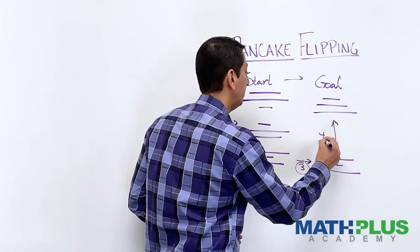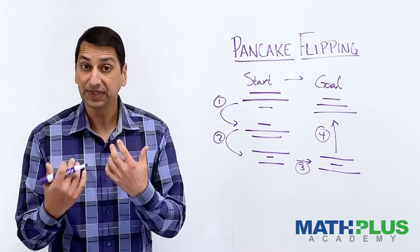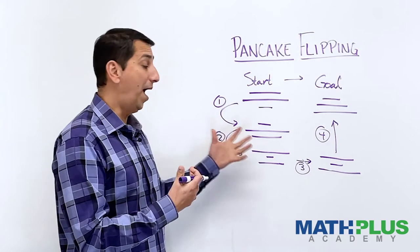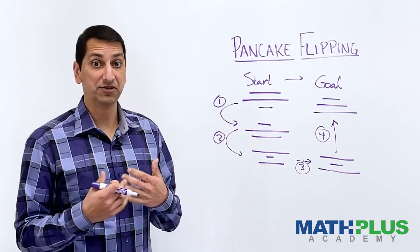So I was able to do it in four flips. Can you do better? Is there an optimal way to do this? Can you do it in fewer flips?